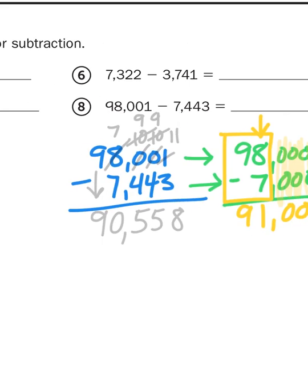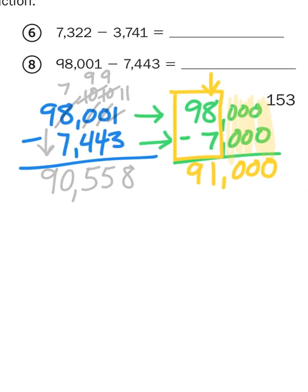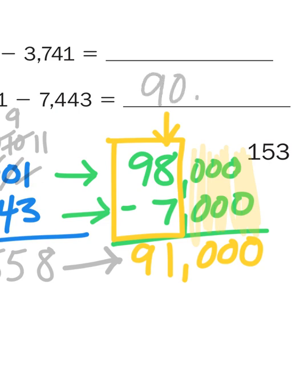Now again, my estimation of 91,000 is reasonable. It's reasonable because if I rounded 558 to the nearest thousand, it would round up to 1,000. So 90,558 would round up to that 91,000 amount. So that's how I solve this problem. 90,558.